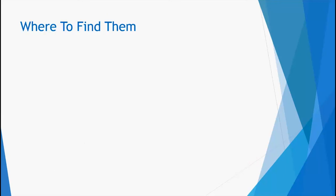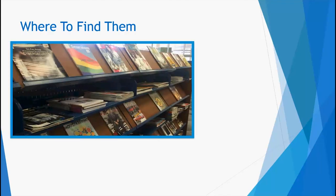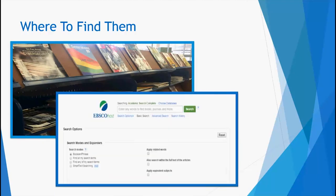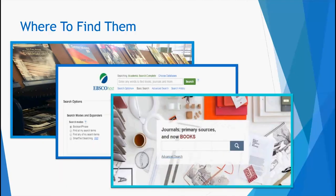You can search and find both popular and scholarly articles on a topic you're researching by using the print journals available at your campus library, or by using online databases such as Academic Search Complete, JSTOR, and many others.